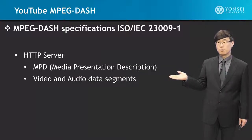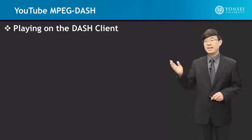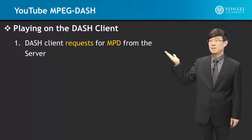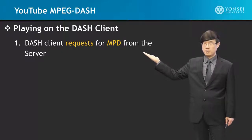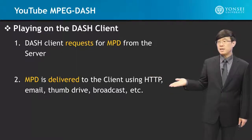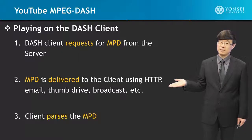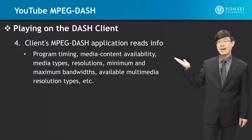On the HTTP server, the MPD and the video and audio data segments are stored, maintained, and controlled there. Playing on a DASH client begins at step one, where the DASH client requests the MPD from the server to be sent. This is a pull mechanism, so the client needs to request it for it to be delivered from the server. The MPD is delivered to the client using HTTP, email, thumb drive, broadcast, or some other mechanism. The client then parses the MPD, and the client MPEG-DASH application reads its information.